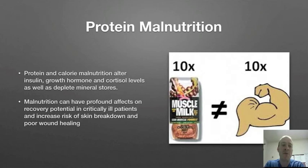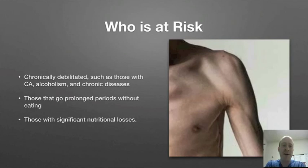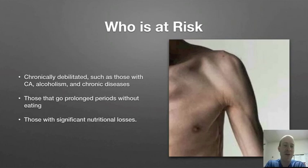So who is at risk? Well, it's exactly those patients that you would think are at risk: the chronically debilitated patient, such as those with cancer, alcoholism, chronic disease, those that go prolonged periods without eating, and those with significant nutritional losses — for example, some type of chronic diarrhea where they're losing a lot of their nutrition through their enteropathy.